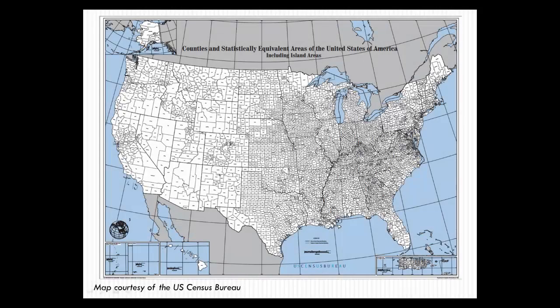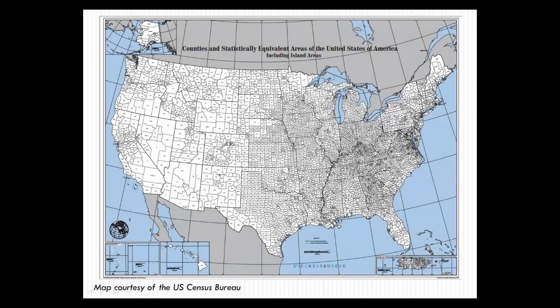Today, there are more than 3,000 counties and county equivalents serving as jurisdictions for records within the United States. However, few of these counties have maintained their original shape and area.